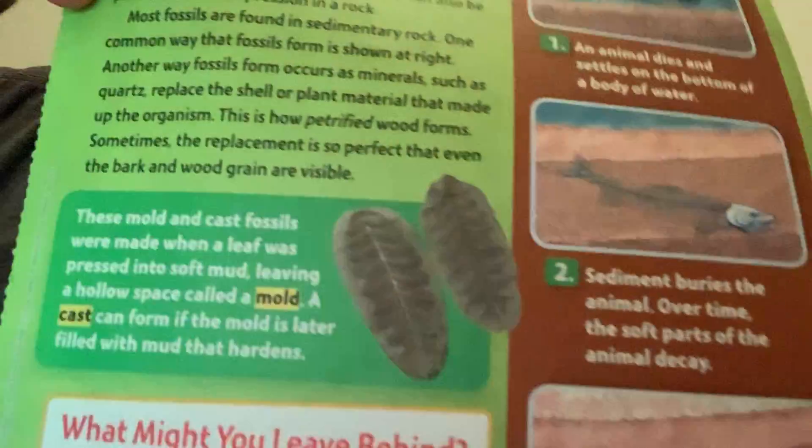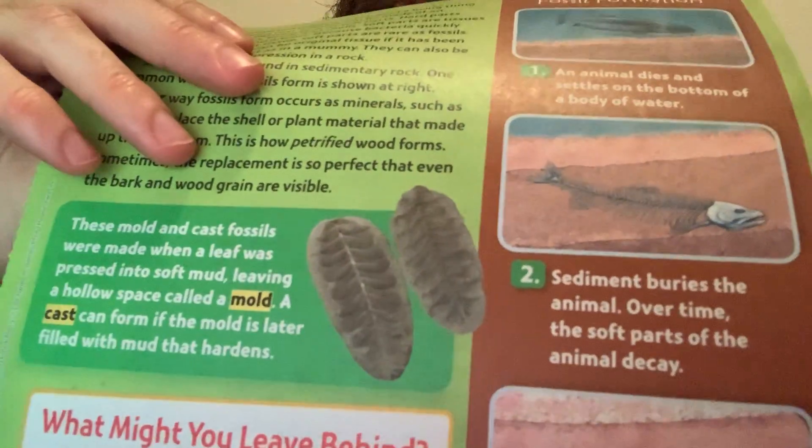This is a mold or cast of plants. It's similar to putting a ceramic cast around your face — like actors do to make masks for a movie. It's a liquid that hardens and makes an exact cast mold of your face. This is the same concept, except with plants. The text says these mold and cast fossils were made when a leaf was pressed into soft mud, leaving a hollow space called a mold. A cast can form if the mold is later filled with mud that hardens. The leaf presses against the mud, makes an impression — similar to how footprints make an impression — and once the mud hardens it makes an exact little replica of the actual leaf.